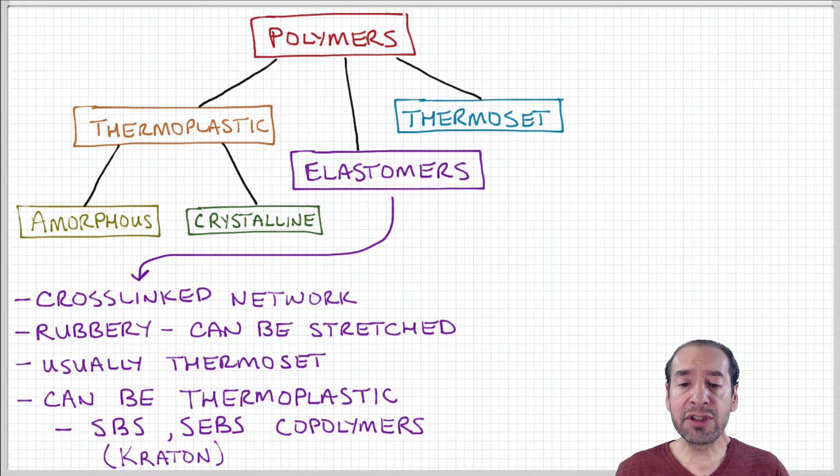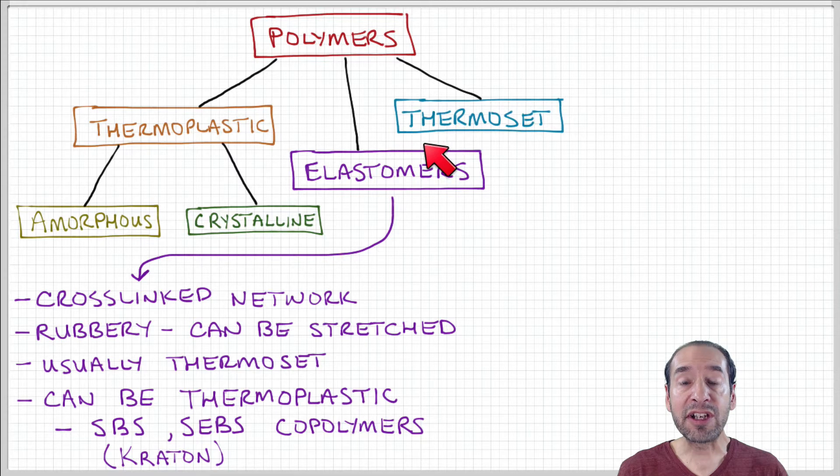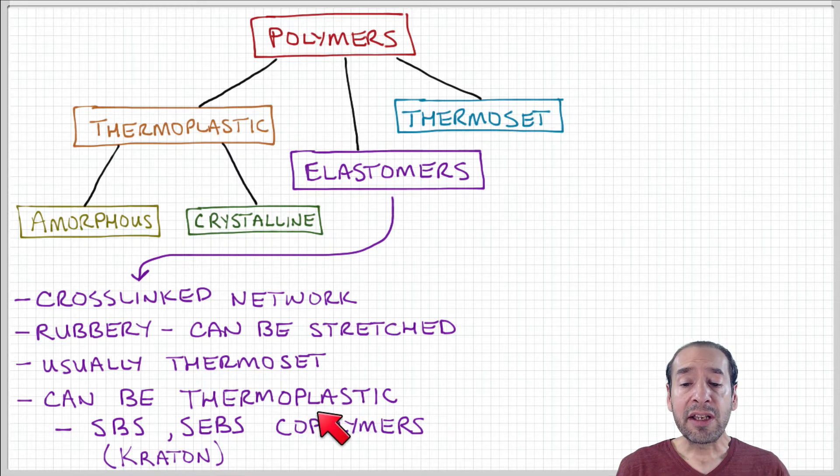But these materials can be both thermosets or thermoplastics depending on the nature of how this network is formed. Again if the network is formed by chemical bonds that are permanent then this will be a thermoset. So for example if you heat up an elastomer it's not going to soften and flow, it's going to remain a connected network. But there are some classes of elastomers that are thermoplastics meaning that you can heat them and they will soften and flow. And these are called thermoplastic elastomers.